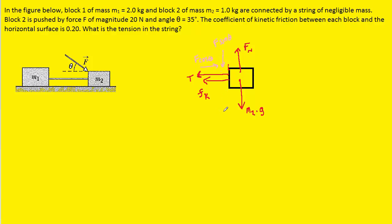Now that we have drawn all of the forces acting on this box, we're going to apply Newton's second law in both the x and y direction. For the x direction, we would have the f cosine theta pushing force. We would have the tension force, and because it's pointing in the leftward direction, we're going to call that minus t. And then we have minus the kinetic frictional force also, because it's pointing to the left. And we would set that equal to the mass of block 2 times its acceleration.